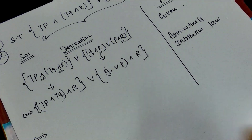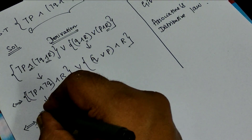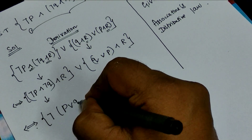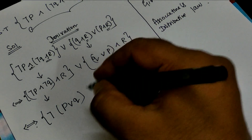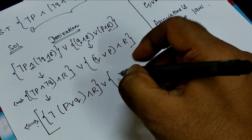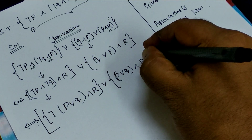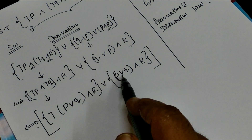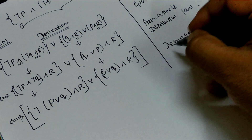Next step: here we can use De Morgan's law, which gives negation of (P or Q). De Morgan's law changes AND to OR and OR to AND, giving us R or (negation P or negation Q) or R or R. Here also we can write P or Q by commutative law. In this step we have used two rules: De Morgan's law and commutative law.